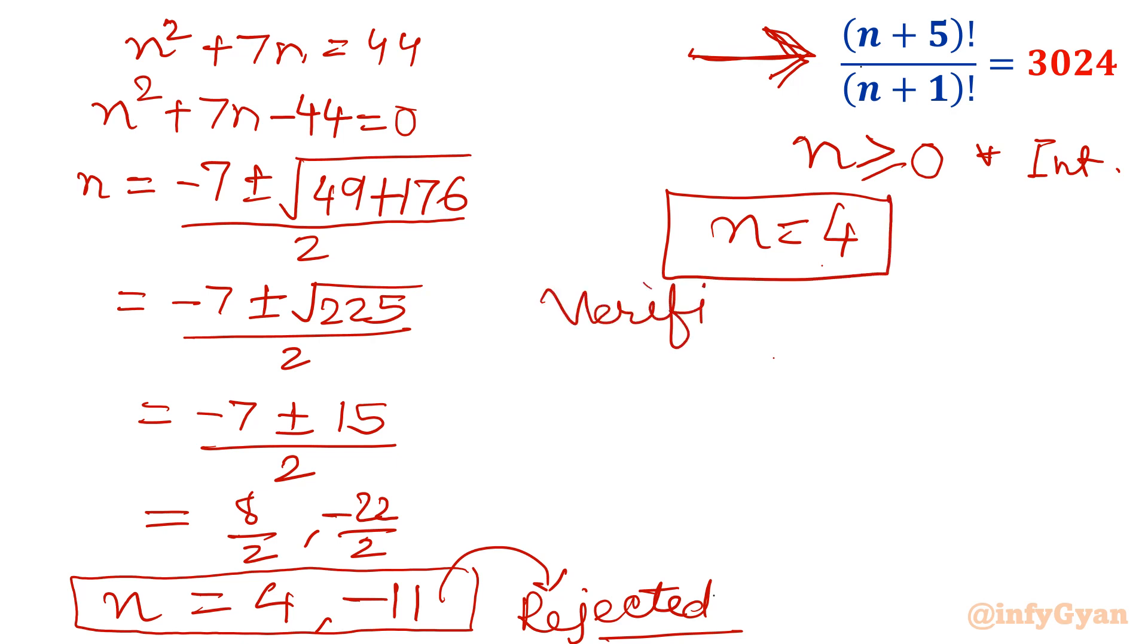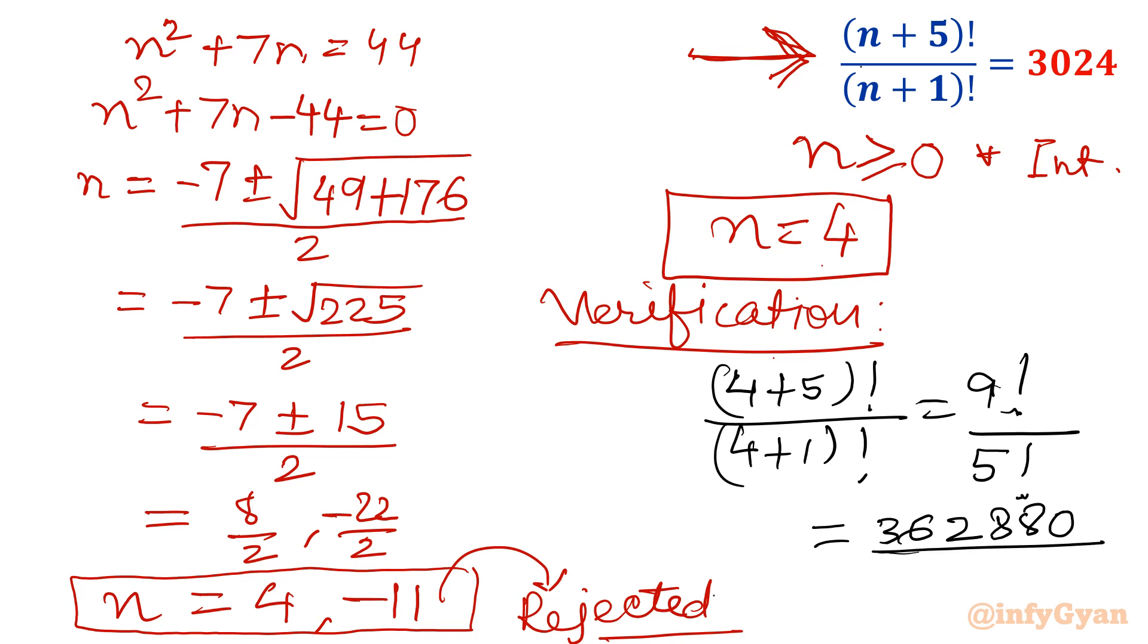Now let us verify this value. What I will do is simply put n = 4 in the given value. So (4+5)! over (4+1)! is 9! over 5!. 9 factorial is 362,880. 5 factorial we know is 120. If you calculate this value, this comes out to 3024, which is our right-hand side. That means n = 4 is our final and correct solution for the given factorial equation.